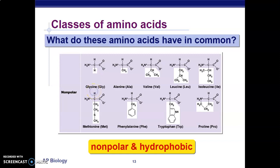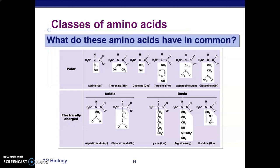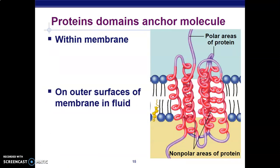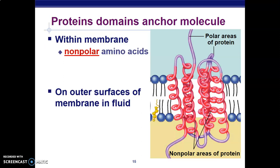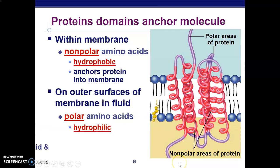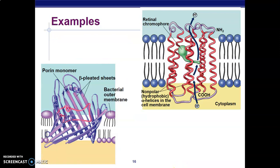Polar ends are hydrophilic while non-polar ends are hydrophobic. On the outer surface of the membrane we have peripheral proteins, and the ones that span through are the integral proteins. Within the membrane, non-polar amino acids are hydrophobic and anchor the proteins into the membrane, while polar amino acids are located at the heads — the polar aspects of the phospholipids. Different proteins can be seen with non-polar hydrophobic helices.